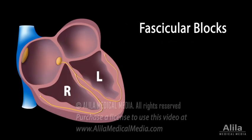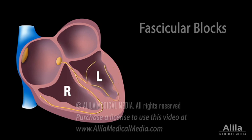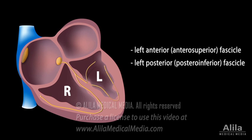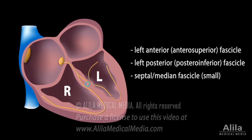The left bundle branch that delivers electrical signals to the left ventricle has two main fascicles, left anterior and left posterior, which conduct impulses to the anterior and posterior walls respectively. There is also a small septal fascicle that activates the left septal surface.